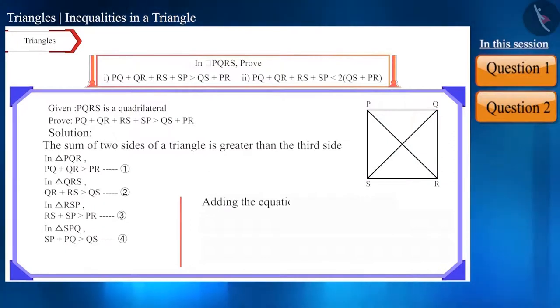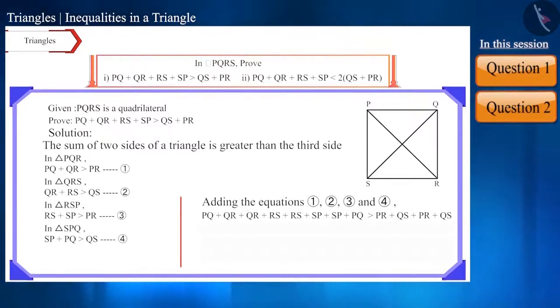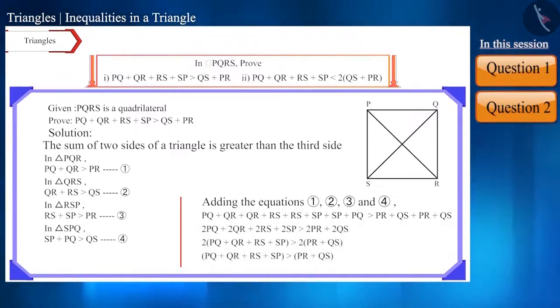Now, if we add all four inequalities, then we will get... Now, by simplification of the left side and the right side, you will get... and thus we proved that the sum of the four sides of a quadrilateral PQRS is larger than the sum of its diagonals.